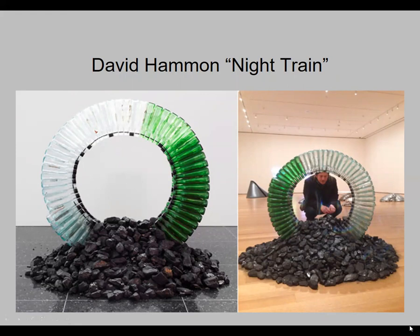Another Hammons piece is called Night Train. It's a play on words — it resembles a train, coal, and the railroad system, but all the bottles are also Night Train, a cheap liquor. When I lived in Baltimore — and I think Hammons might be from Baltimore — there was a liquor store on every corner selling really cheap rot-gut liquor, and Night Train is presumably one of them.